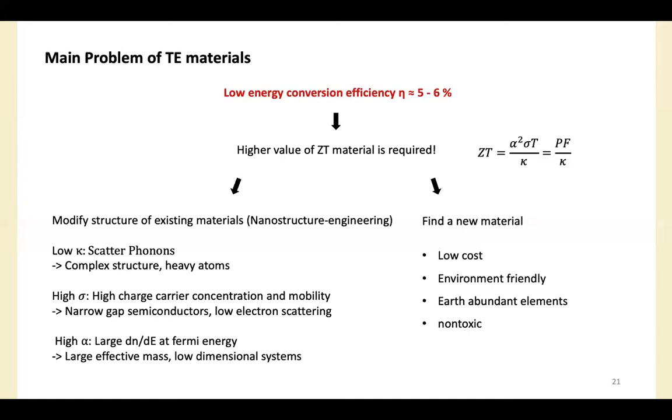In case of finding a new material, basic requirements should be satisfied. For example, low cost, environment friendly, earth abundant elements, and non-toxic. Discovering high ZT values of new materials under these conditions is also crucial.